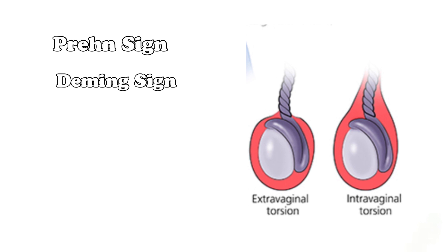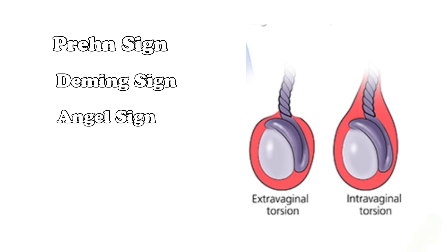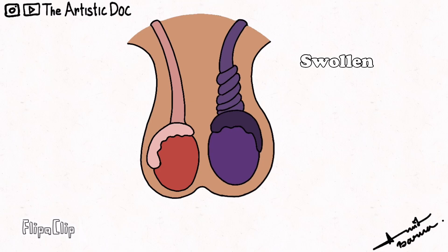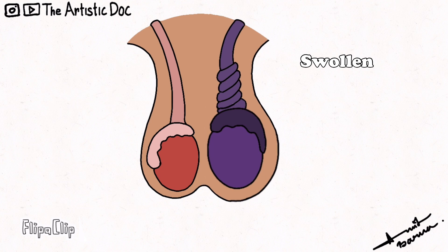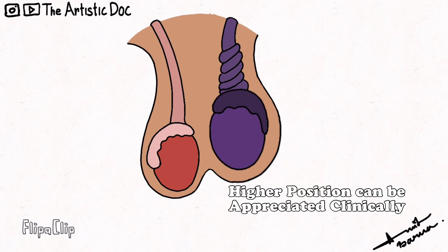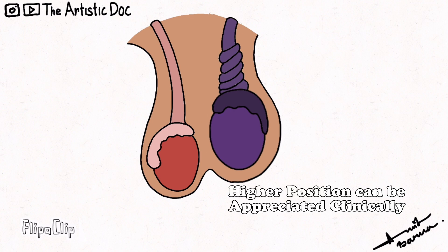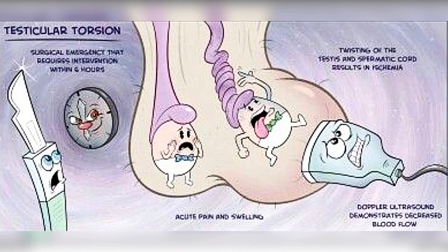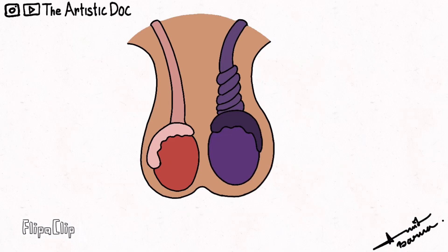The testes may be swollen or it can go to a higher position due to shortening of the spermatic cord. This higher position of the testes can be appreciated clinically, which is called the Deming sign. The clinical diagnosis is supported by Doppler imaging.